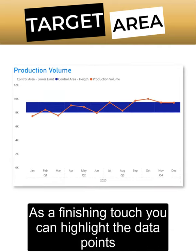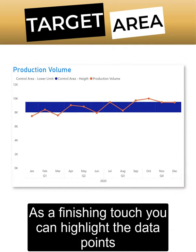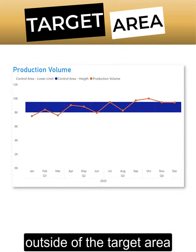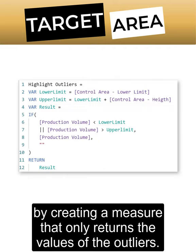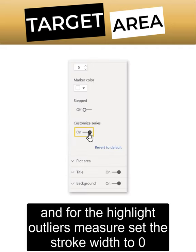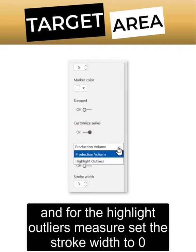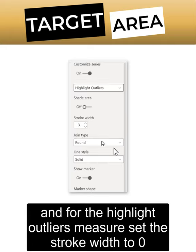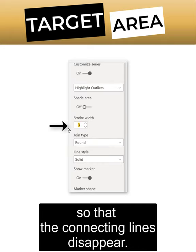As a finishing touch, you can highlight the data points outside of the target area by creating a measure that only returns the values of the outliers. Then place it onto line values, and for the highlight outliers measure, set the stroke width to zero so that the connecting lines disappear.